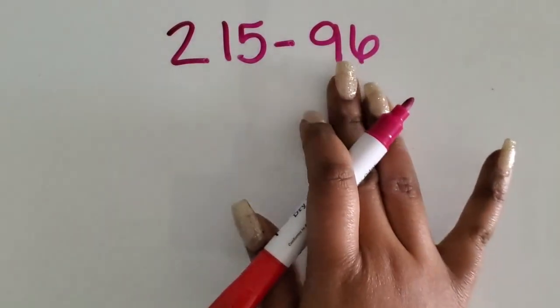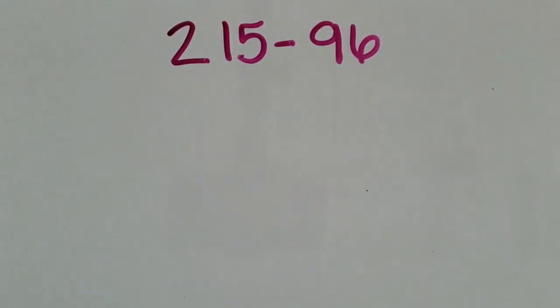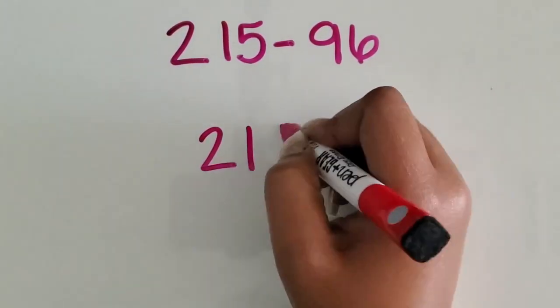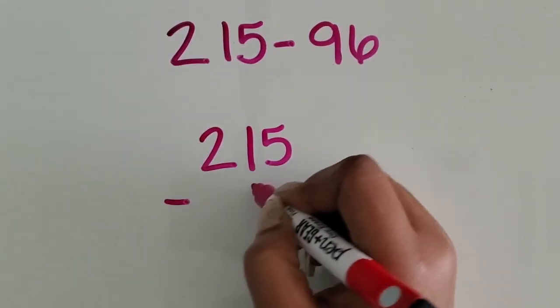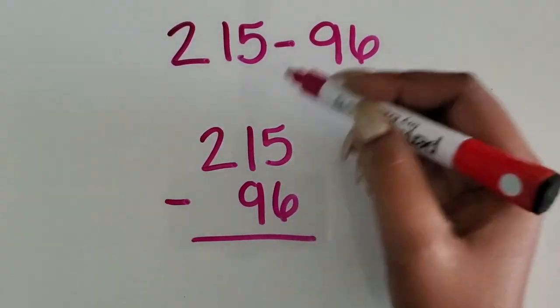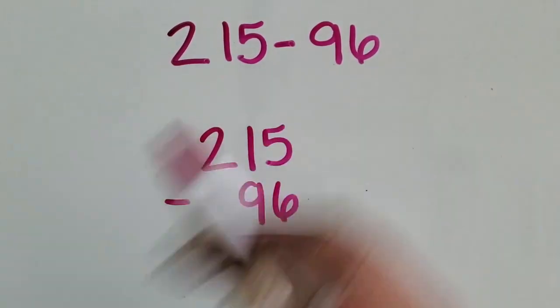We are going to subtract a two-digit number from a three-digit number using the standard or traditional algorithm. We're going to start by lining up our numbers vertically by placing the ones in the ones place, the tens in the tens place, and then the hundred in the hundreds place.